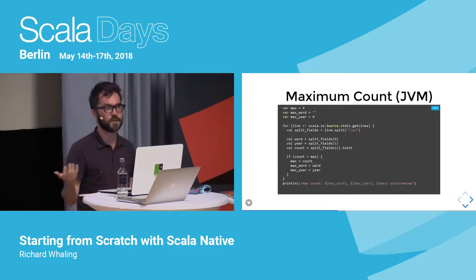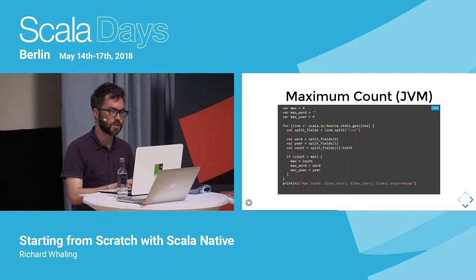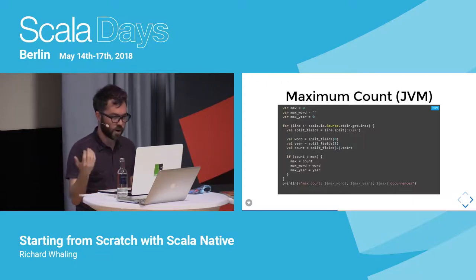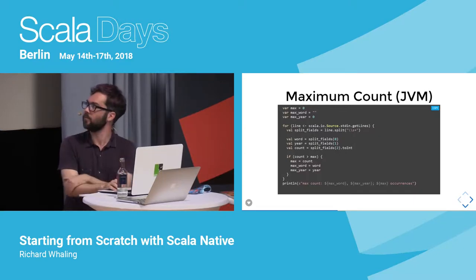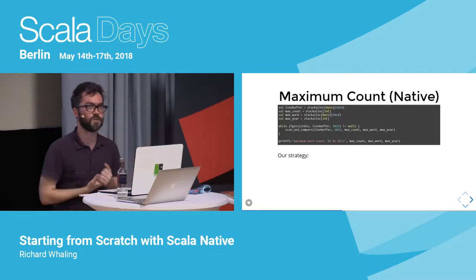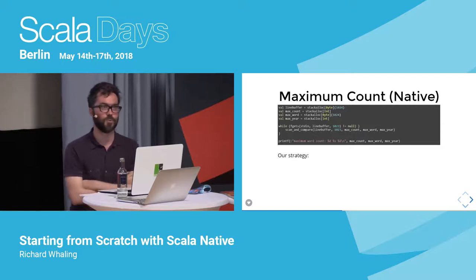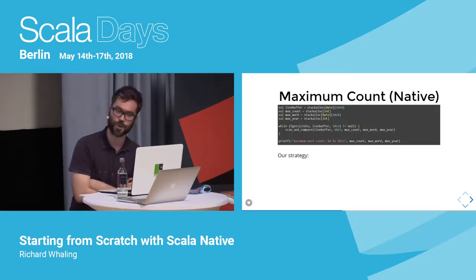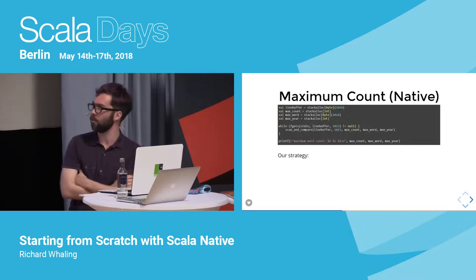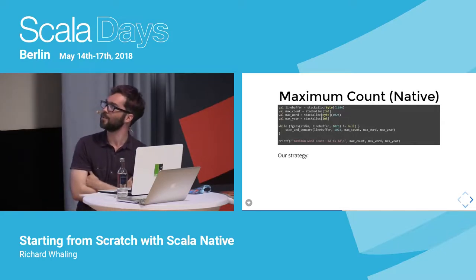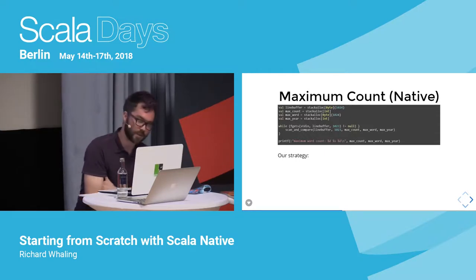For a naive JVM implementation to find the most frequent word, we have vars for the maximum word, count, and year seen so far, iterate over stdin, split lines, pull out the things we care about, and check and update the vars. You could certainly optimize over this, and people can do high-speed I/O on the JVM pretty well, but this is at least a good first attempt. For the native approach, we want to stack allocate everything to keep allocation cost down and get to a point where the program generates no garbage whatsoever.